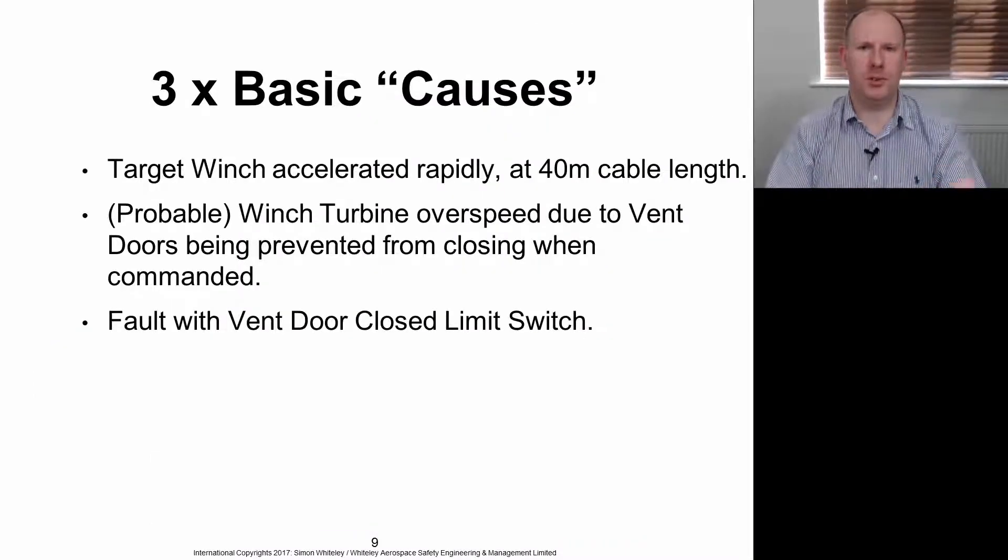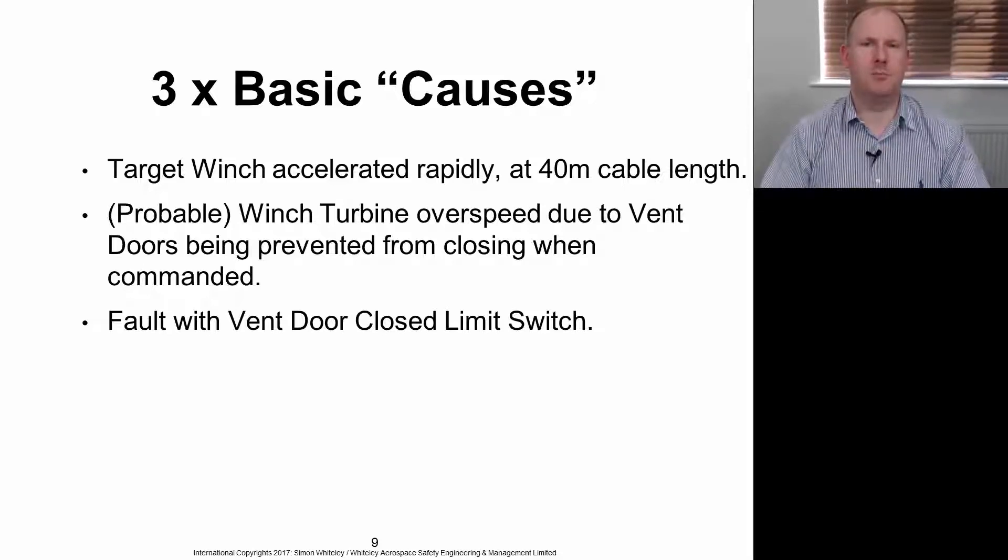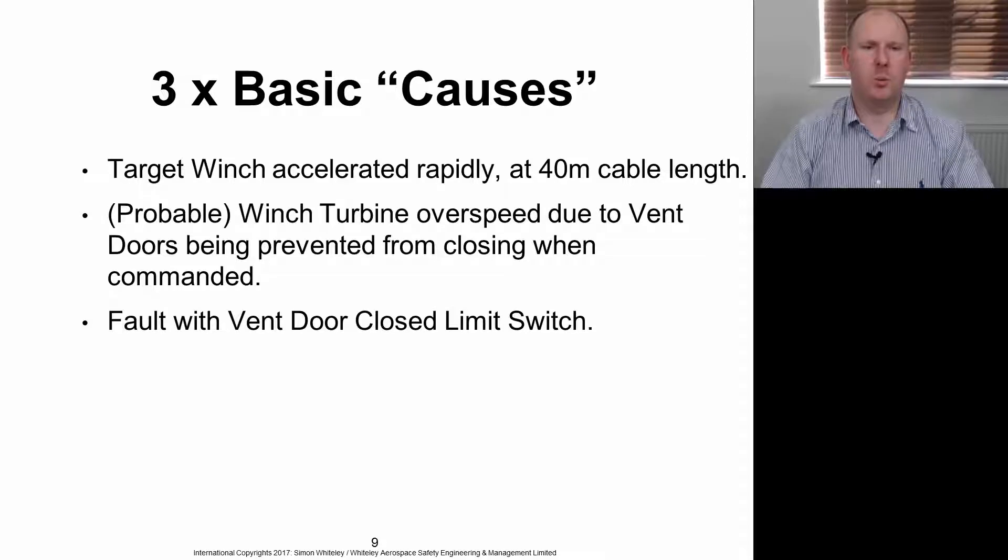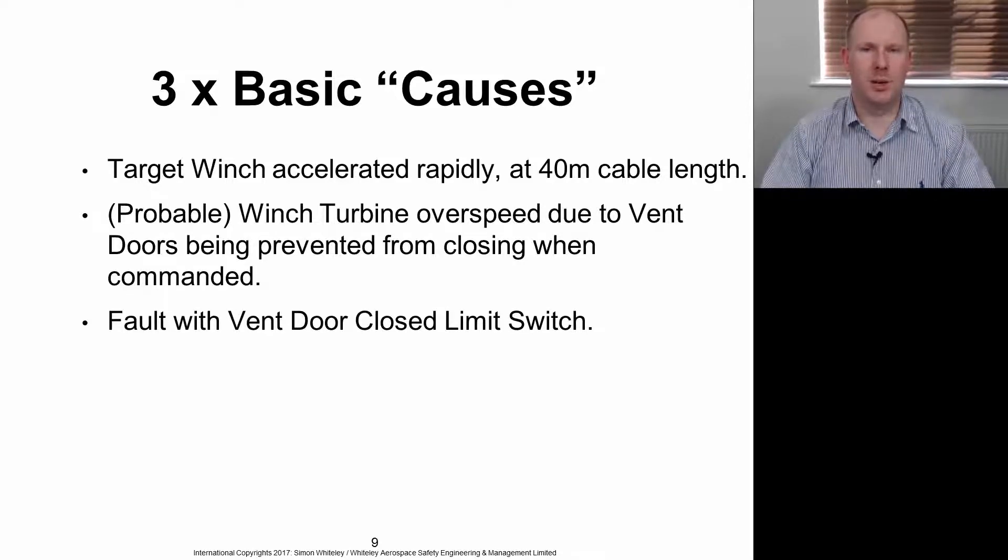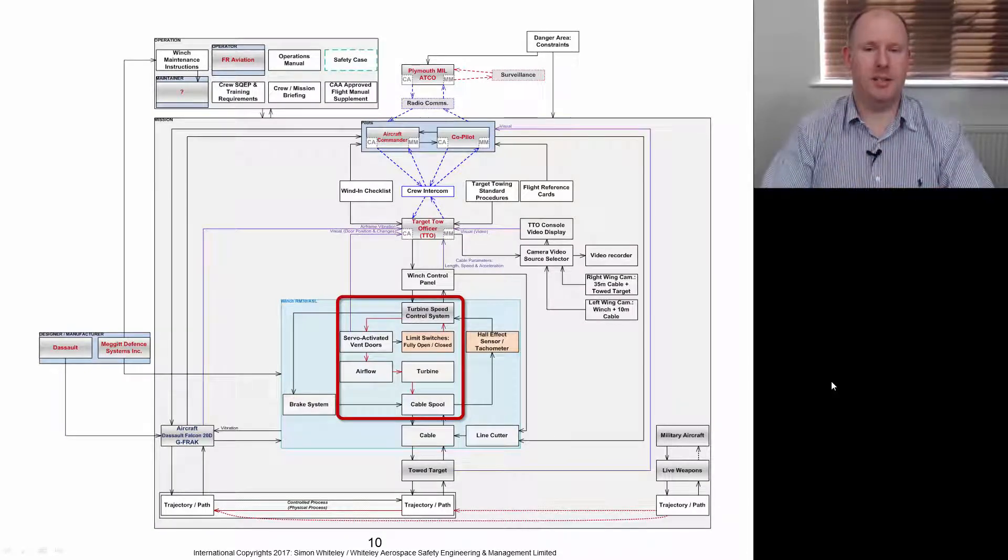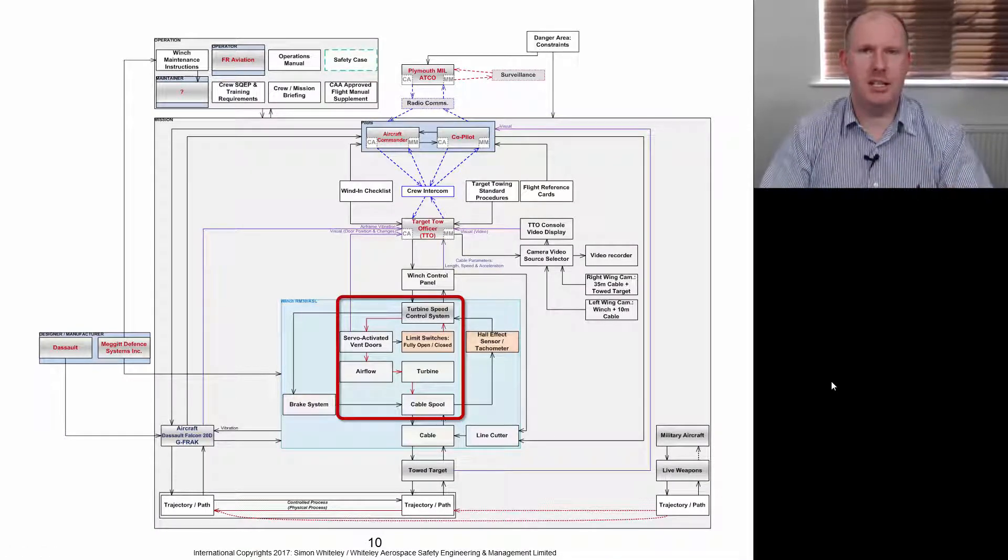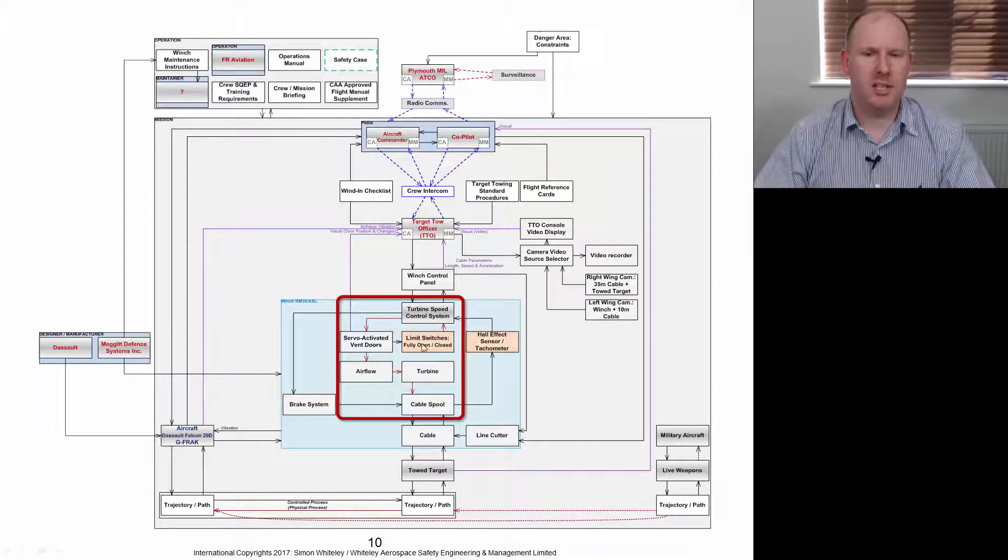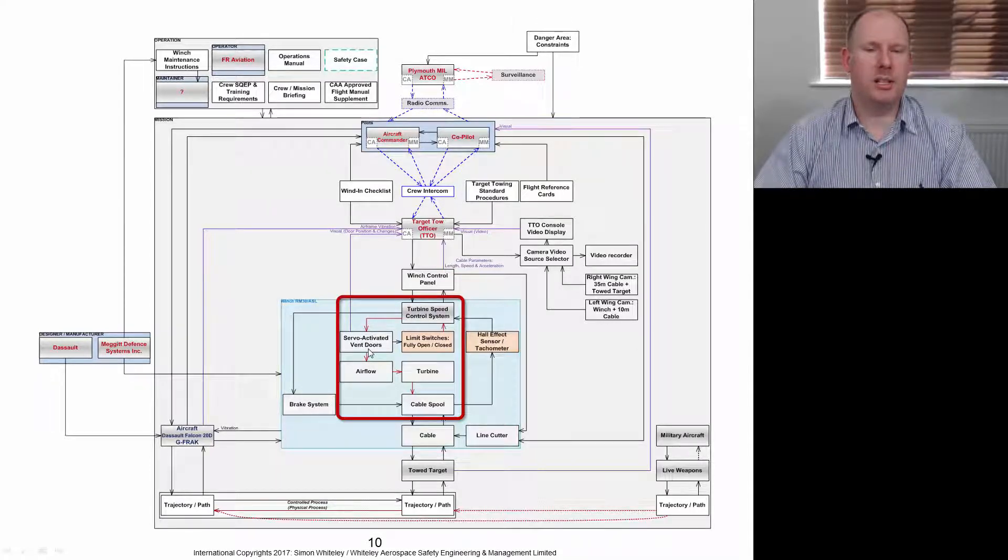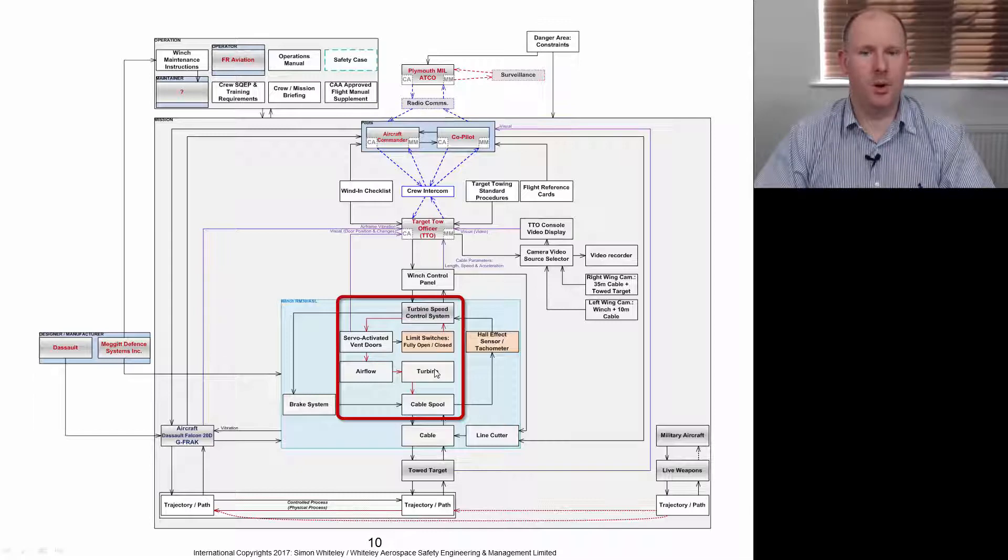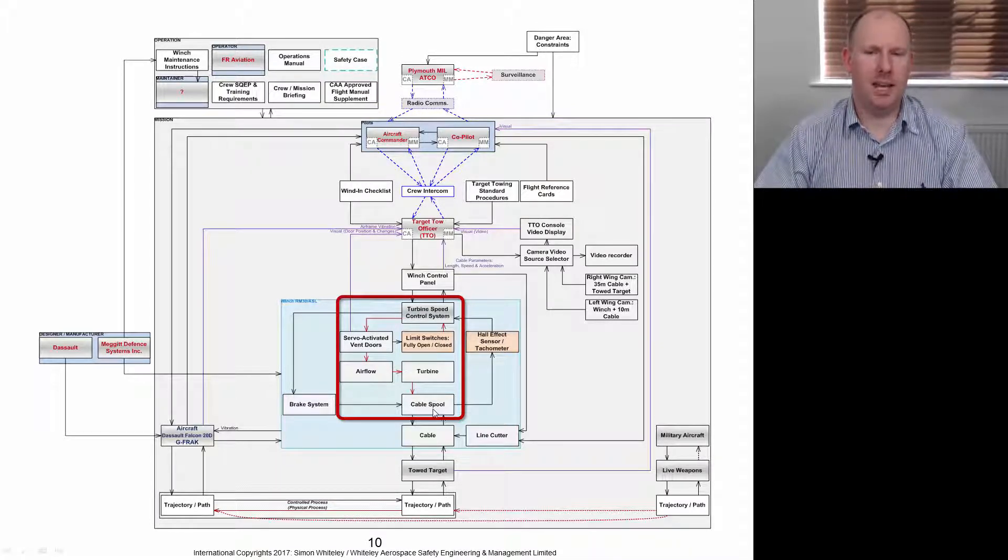There are three basic causes that I've lifted from the Air Accident Investigation Branch report. The target winch accelerated rapidly at 40-meter cable length. It's probable that winch turbine overspeed was due to the vent doors being prevented from closing when commanded, and this was associated with a fault with the vent door closed limit switch. This is just zooming in on the technical aspects of the winch itself. The turbine speed control system receives feedback from the limit switches—in this case, the closed switches—and then it decides how much it needs to open or close the vent doors to control the airflow to control the speed of the turbine winding the cable spooling.